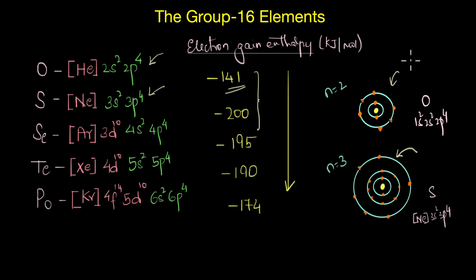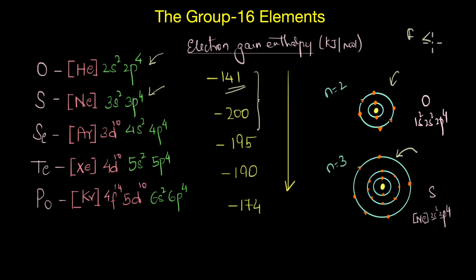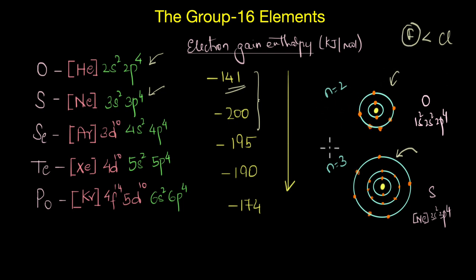Something very similar happens in the case of the halogens — the Group 17 elements, which we will study in subsequent videos. There again, the electron gain enthalpy value of fluorine is much less negative compared to chlorine, and this is again because of the small size of fluorine, due to which the incoming electron experiences higher electron–electron repulsion.